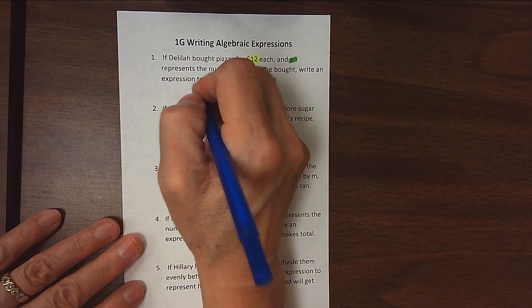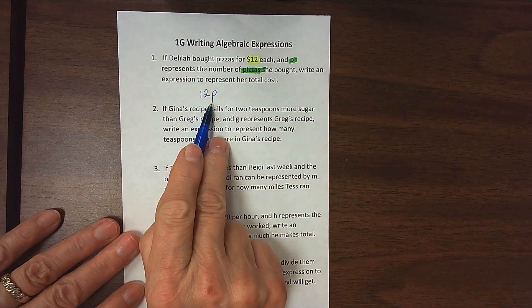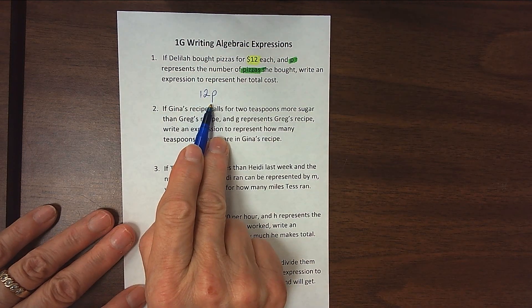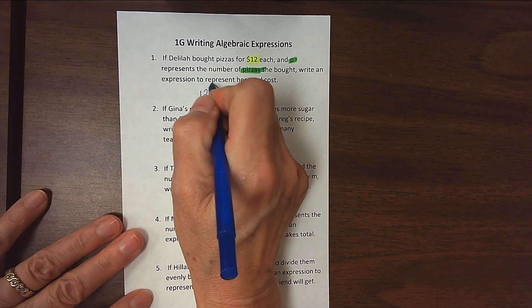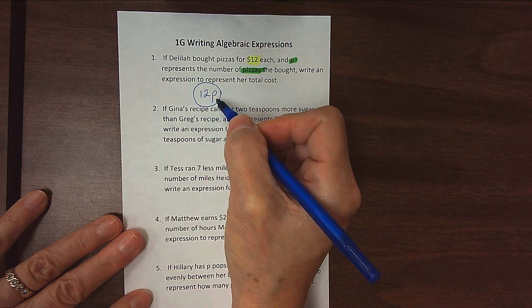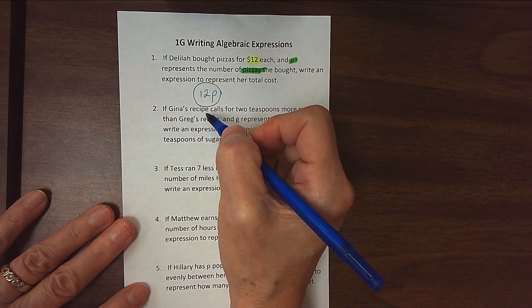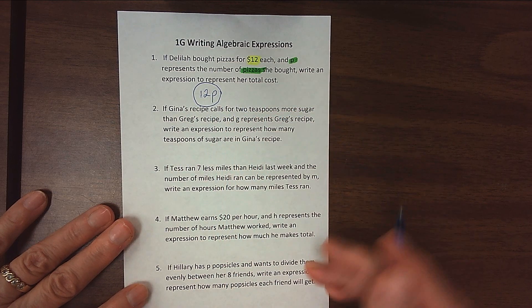So if I take my $12, and I multiply by P, whatever the number of pizzas is that I'm going to buy, I would be able to find my total cost. So notice that I wrote this with 12P. I wrote the number first, no operation symbol, and the P. When we're dealing with algebra, we know that this means 12 times P.